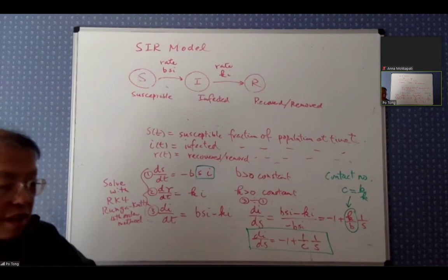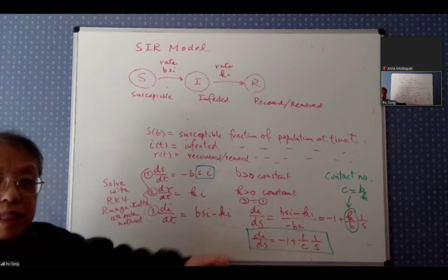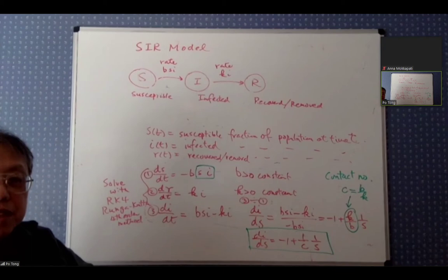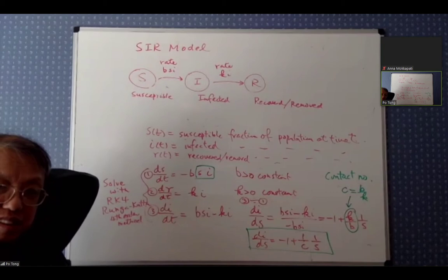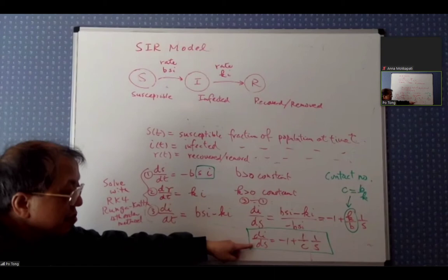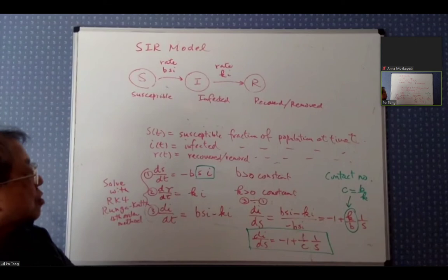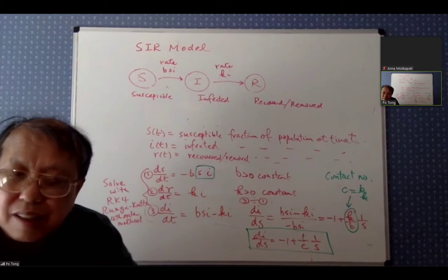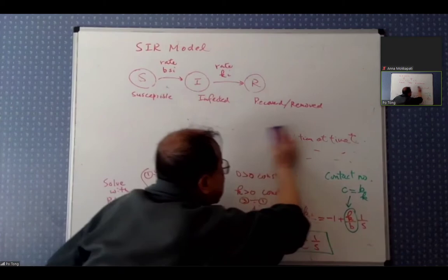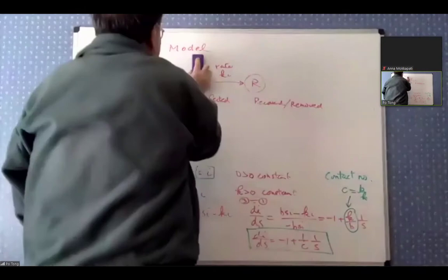Notice that this differential equation di/ds has no time in it — it just relates i and s. Where i is the fraction of infectious people and s is the fraction of susceptible people. Since di/ds has only s on the right-hand side, I can find a relationship between i and s just by integrating.